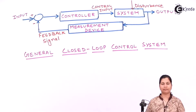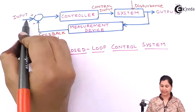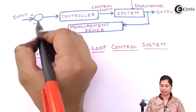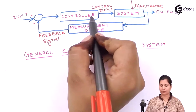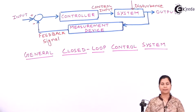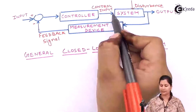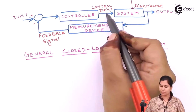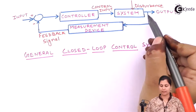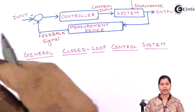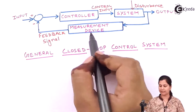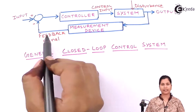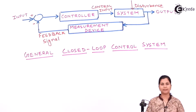This is the way in which we can represent a general closed loop control system. We have an input which is applied to the comparator, which compares the input with the feedback signal. According to that it gives the input to the controller. The controller does some control action and gives the output as the control input. This control input is given to the system and the system gives us the output. The output is fed back to the measurement device, which gives the output as a feedback signal to the comparator.